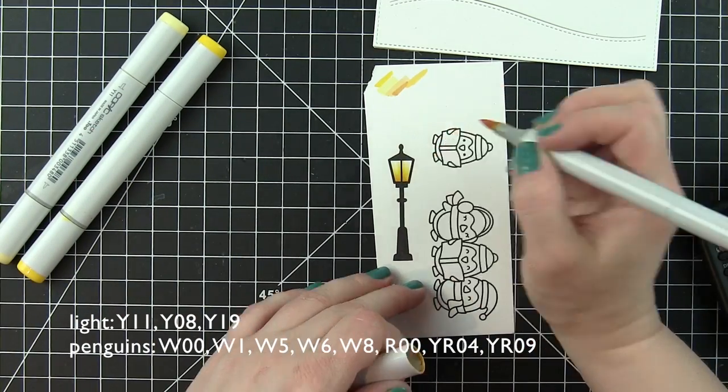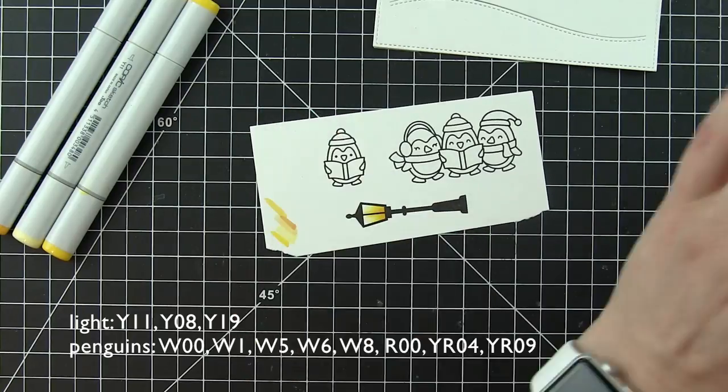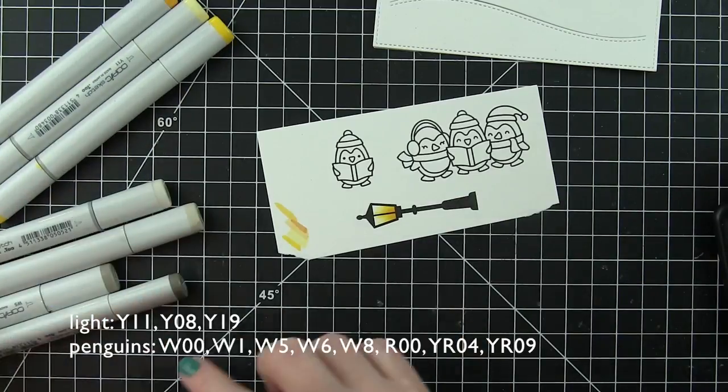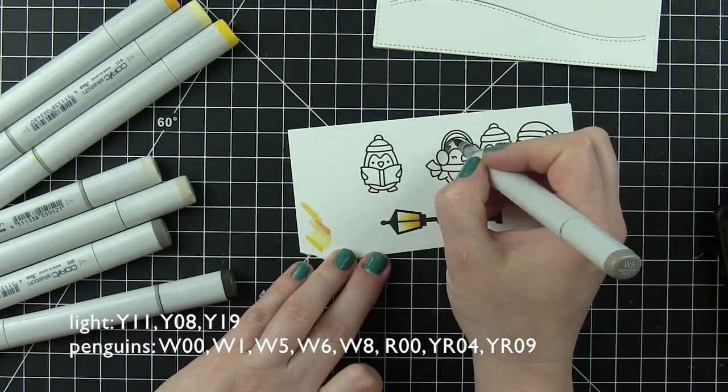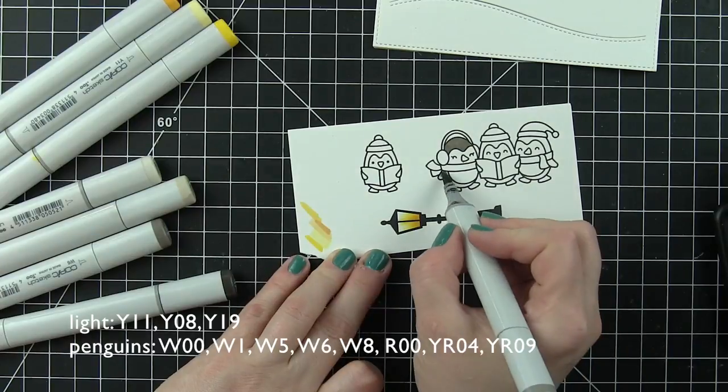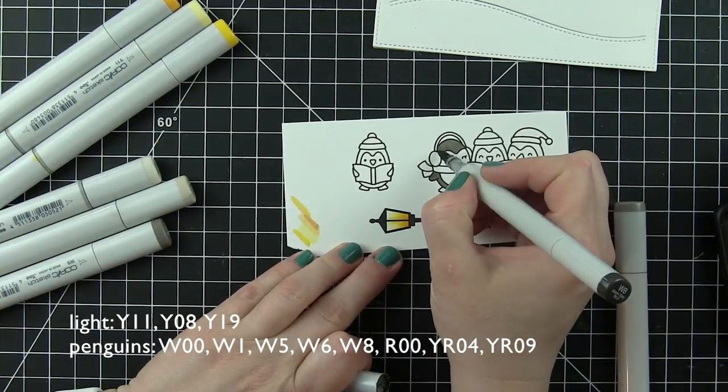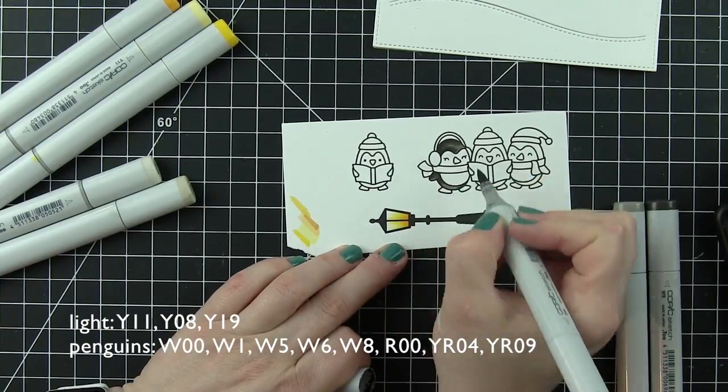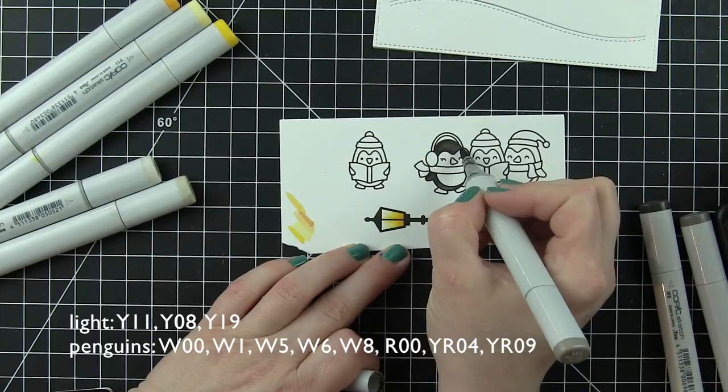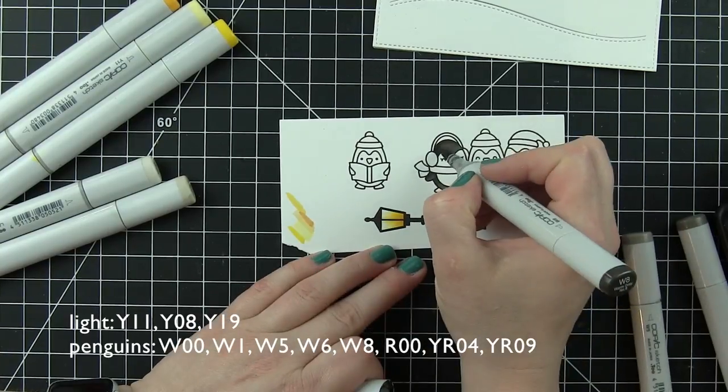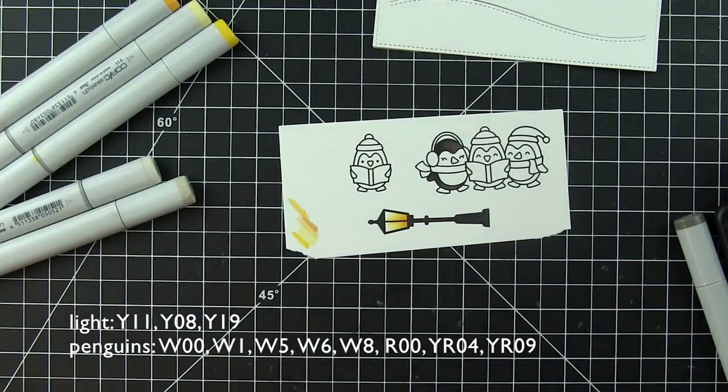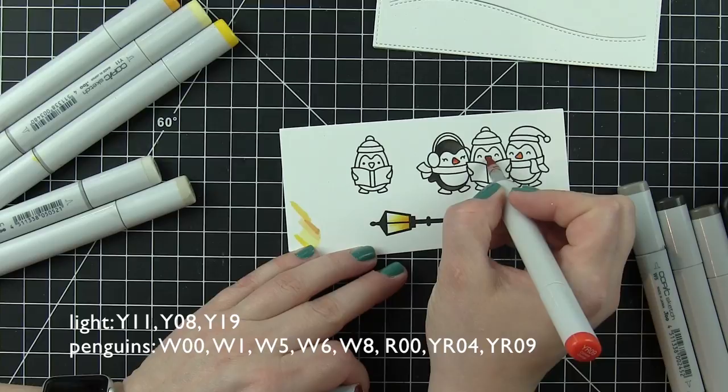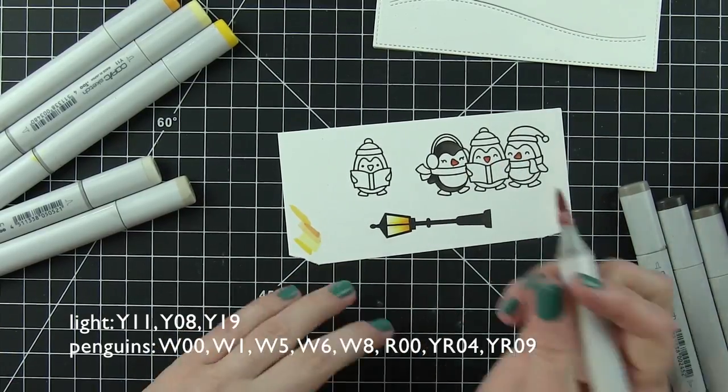To save a little bit of time I went ahead and stamped my images off camera. I've got the trio of penguins, another one of the penguins from Here We Go A Waddling and the light post. In all there's the trio of penguins set and then four individual penguins as well as a little ringing bell, some music notes and tons of fantastic greetings and sentiments. You can mix and match and really customize the card to work for whatever kind of seasonal type of card you're creating.